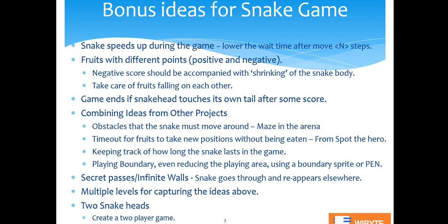Moving forward, we can think about something called secret passes or infinite walls. In our game when the snake hit the edge it just ended. But it could be that this wall is a go-through wall — if the snake goes and hits the right edge, it comes back and appears on the left. Similarly you can have a small mark on the playing arena — if the snake goes inside that mark, it appears somewhere else. That's a kind of secret pass.